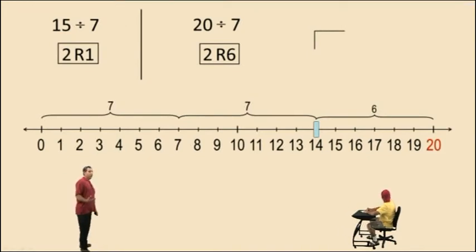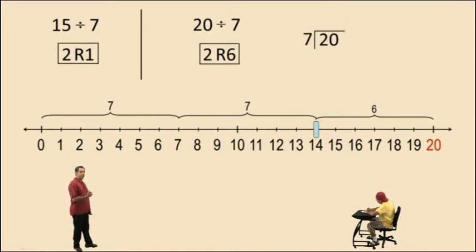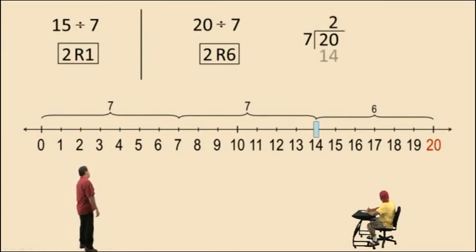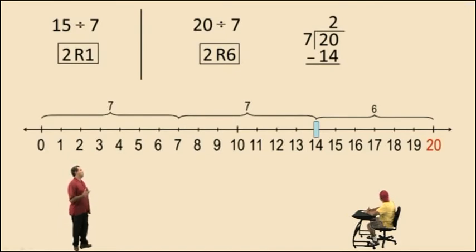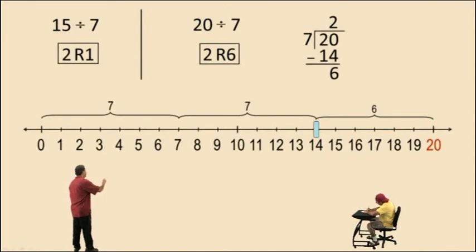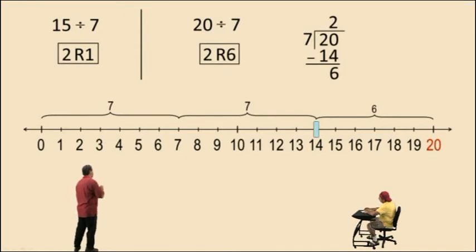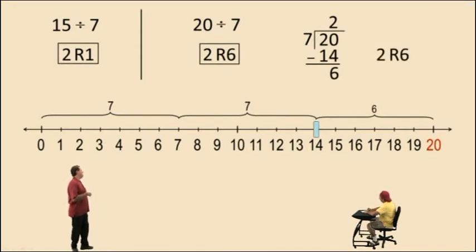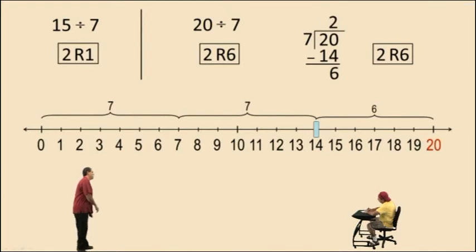Now let's do it with a long division sign. Put the 20 inside and the 7 outside, because we're trying to figure out how many 7's go into 20. 7 goes into 20 two times — that's 14. 7 times 3 would give us 21, that would be too large. So 7 times 2 is 14, we subtract. That gives us 6 remainder units, and because our remaining units are less than the 7 we're dividing by, we stop and write our answer. Our final answer is 2 with a remainder of 6.